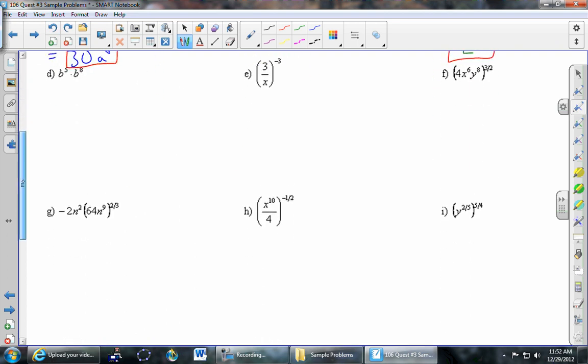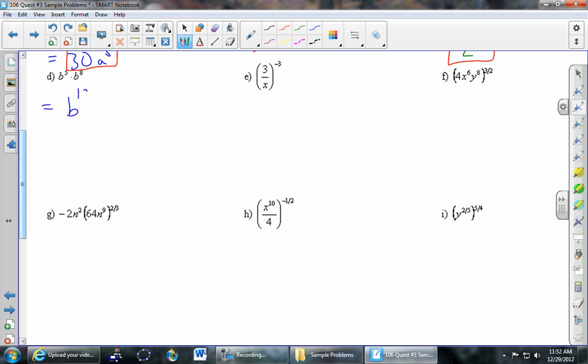Part D: B to the fifth times B to the eighth. So what's the basic idea here? Keep the base. Add the exponents. B to the 13. Then we're done.